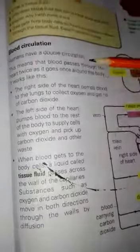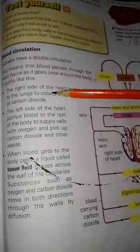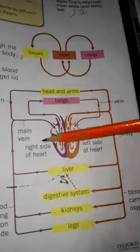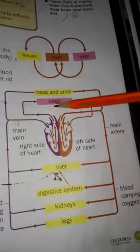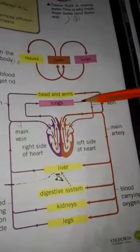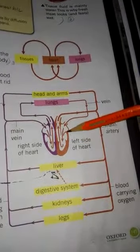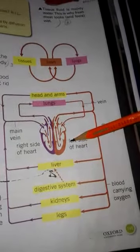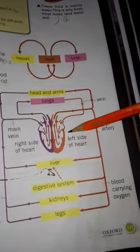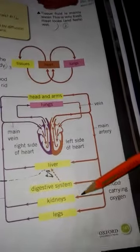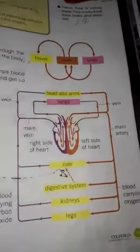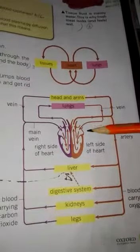The right side of the heart pumps blood to the lungs to collect oxygen and get rid of carbon dioxide. As you can see from this arrow, it pumps blood to the lungs and this blood becomes oxygenated. Then the left side of the heart pumps this oxygenated blood to the rest of the body. In this way, the two-way circulation of the blood takes place through the heart.